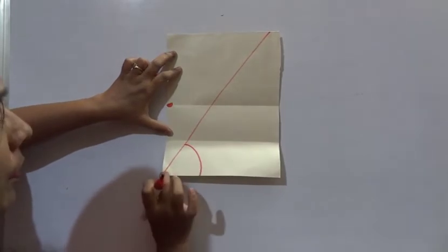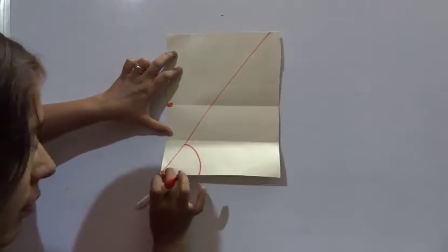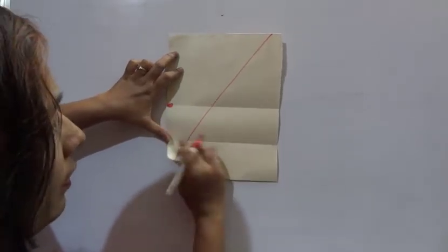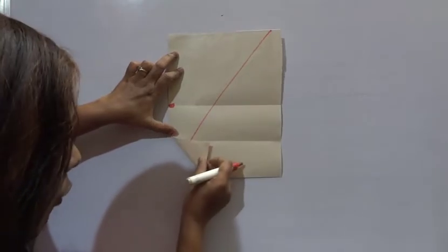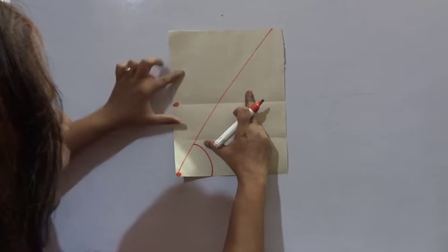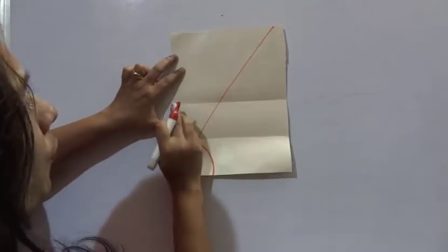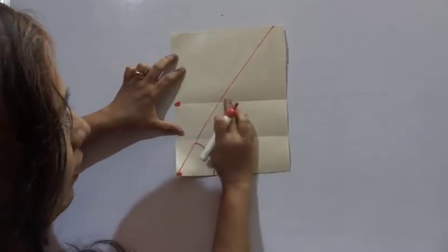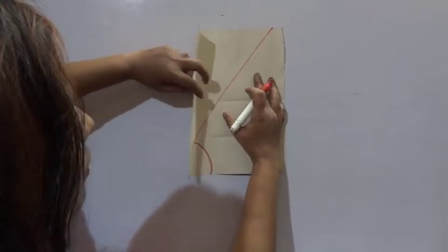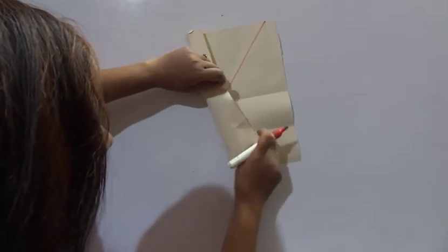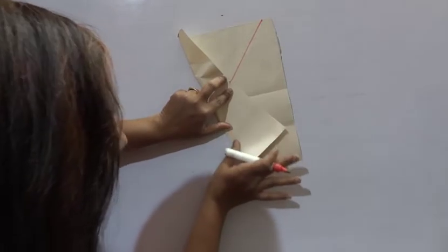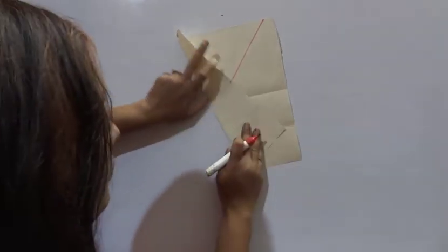Try to fold this vertex, joining this first mark or fold. At the same time, try to fold this point touching this line. I will try here, you just see. In this way, make a fold here.